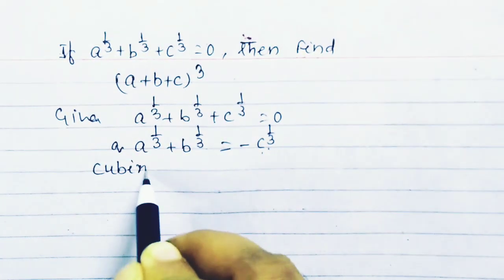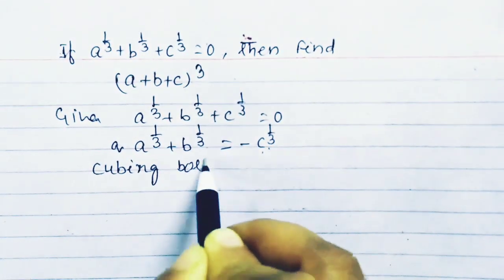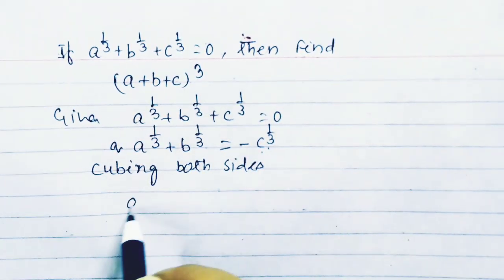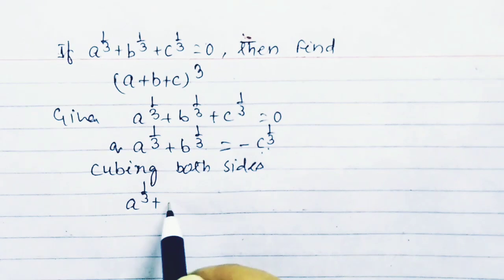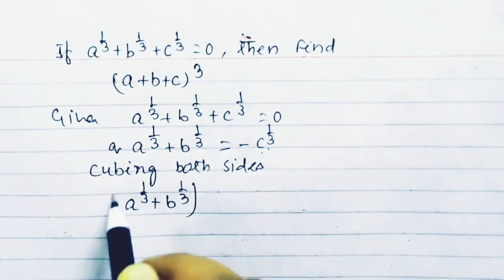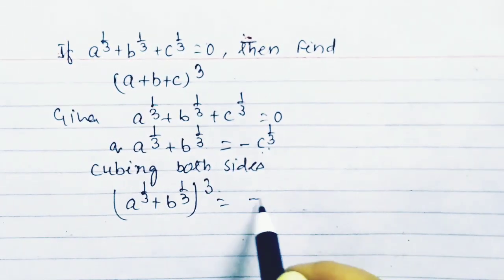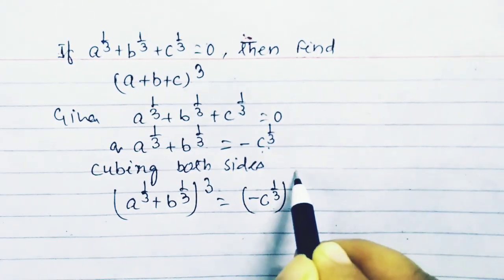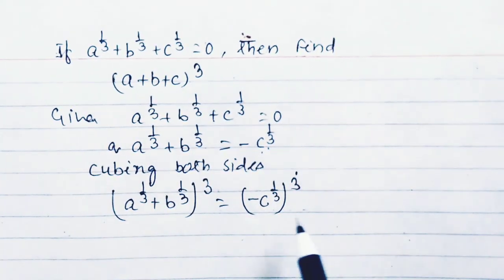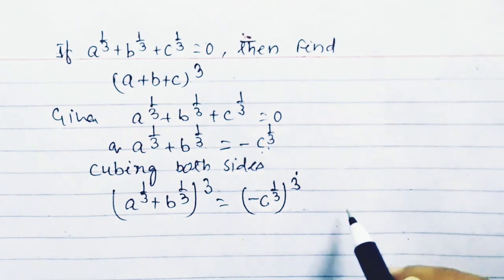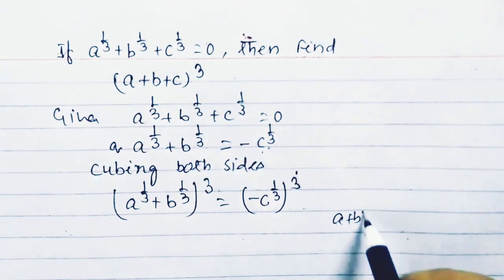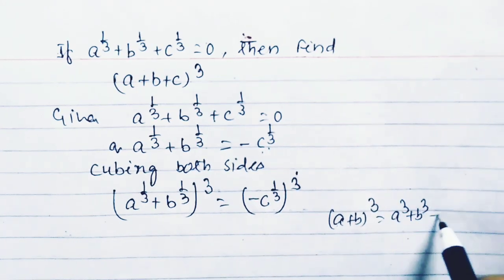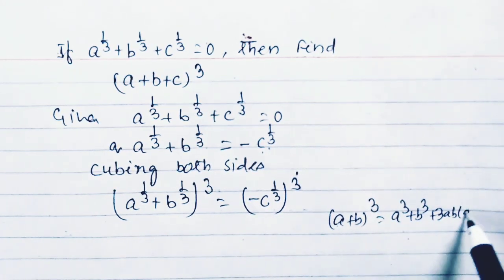Cubing both sides: a to the power 1 by 3 plus b to the power 1 by 3, whole cube, equals minus c to the power 1 by 3, whole cube. Here we can use the algebraic formula: a plus b whole cube equals a cube plus b cube plus 3ab times a plus b.